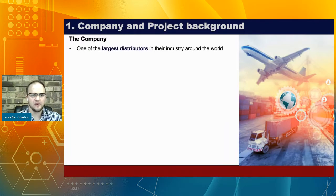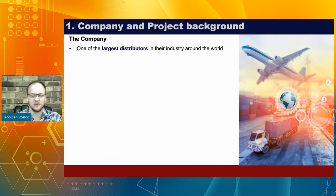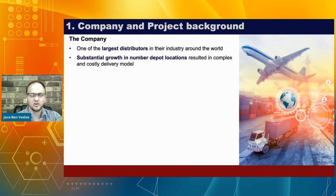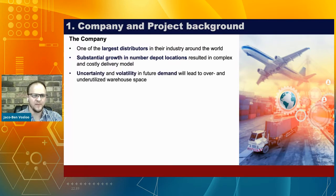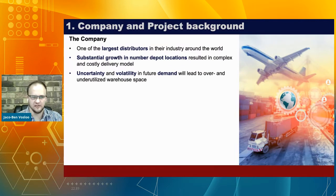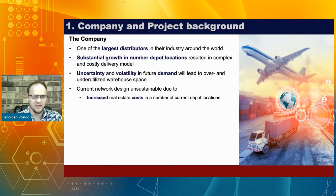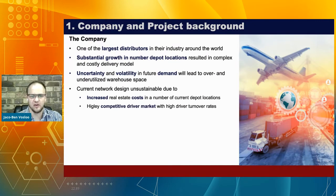A bit of background about the company — unfortunately we can't name them, but they are one of the largest distributors in their industry around the world. They've had substantial growth in the number of depot locations over the last couple of years, which has resulted in a complex and costly delivery model. There's also a lot of uncertainty and volatility in future demand, as is the case with many supply chains currently.